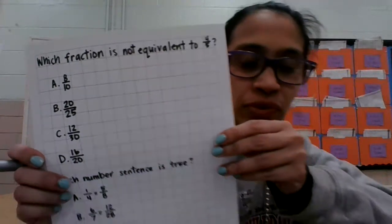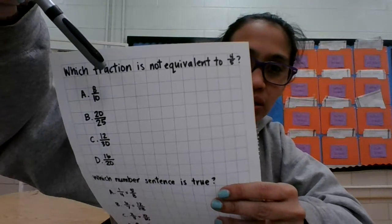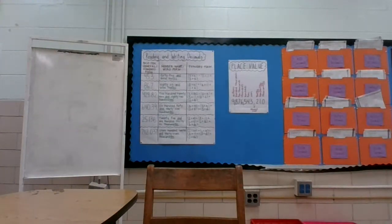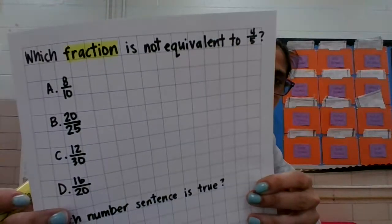For the first one, it says which fraction is NOT equivalent to four-fifths. Let's find the keywords. Get a highlighter if you have one. In the milestone test you can't highlight the screen, but there may be highlighter tools in the test, or you can write it on scrap paper and underline it. I'm going to highlight the word 'fraction' — a fraction is a part of a whole — and also 'equivalent.'